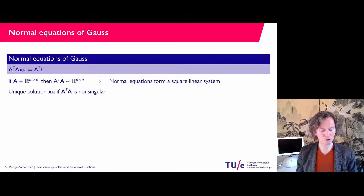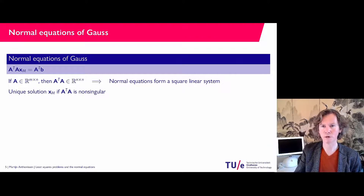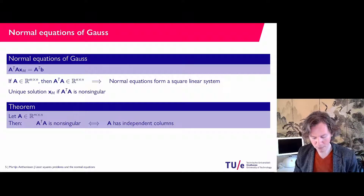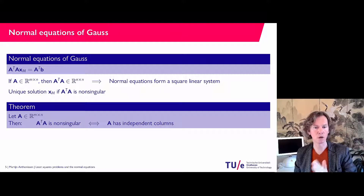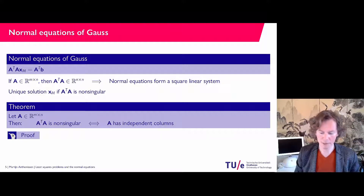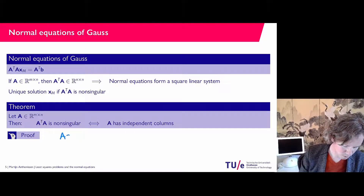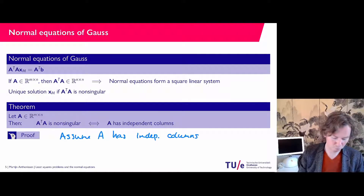This system has a unique solution if A-transpose A is non-singular. The key theorem states: if your matrix has independent columns, then A-transpose A is non-singular. Let's prove the direction where we assume A has independent columns and show A-transpose A is non-singular. We do this by contradiction: assume A-transpose A is singular.